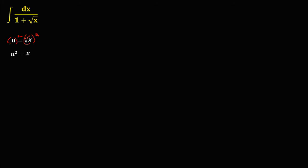Then find the derivative of this equation. The derivative of u squared equals the derivative of x. Since the derivative of x squared is 2x dx, therefore the derivative of u squared is 2u du, and that equals dx.